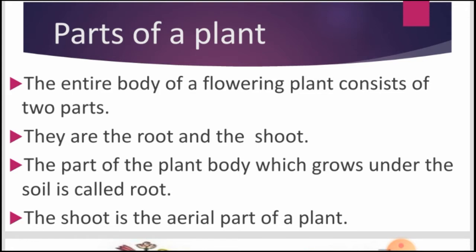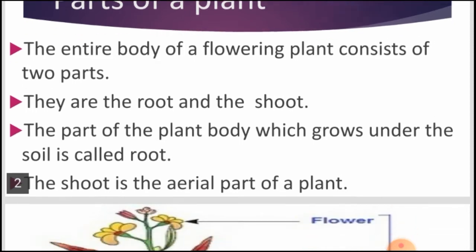Mango — these are all flowering plants. The entire body of a flowering plant consists of two parts: the root and the shoot. The part of the plant which grows under the soil is called the root, and the part which grows above the ground is the shoot.